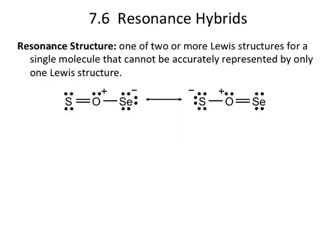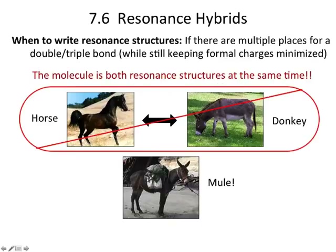The electrons are really present in both of these pictures at the same time. So maybe an analogy is: if a horse mates with a donkey, they produce a mule. And the mule is not really going back and forth from a horse to a donkey — it's a hybrid of both. It has characteristics of both, and you should treat it that way.